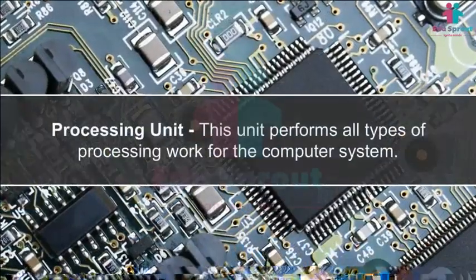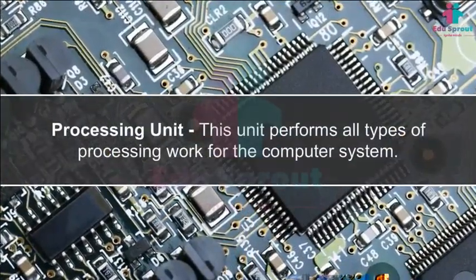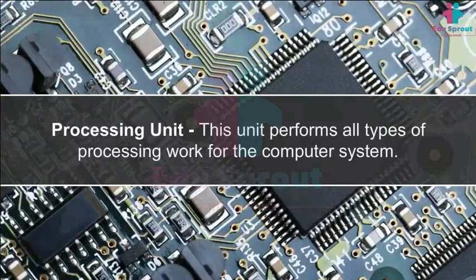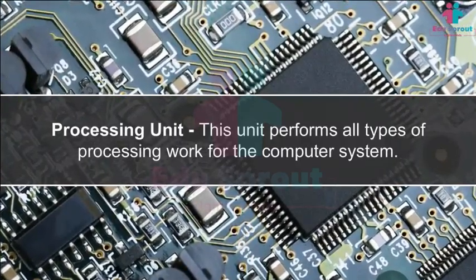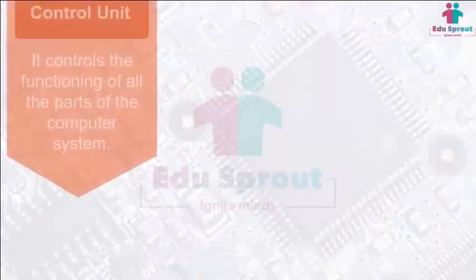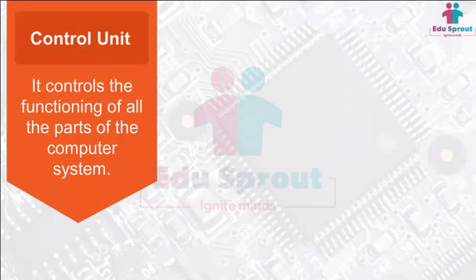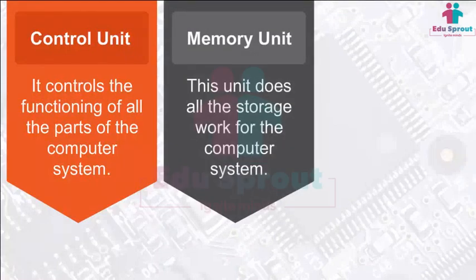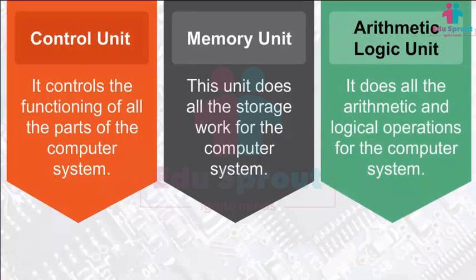Processing Unit: This unit performs all types of processing work for the computer system. It has three parts: the Control Unit, which controls the functioning of all the parts of the computer system; the Memory Unit, which does all the storage work; and the ALU (Arithmetic Logic Unit), which does all the arithmetic and logical operations for the computer system.